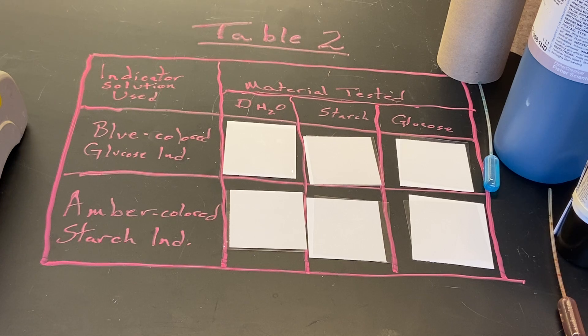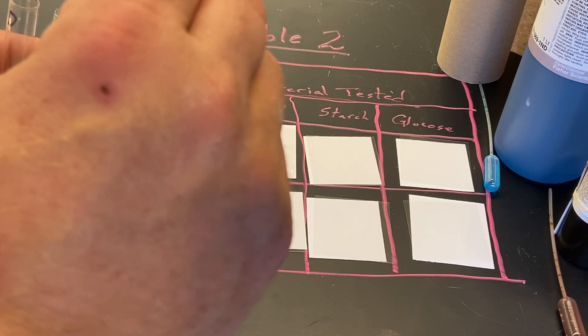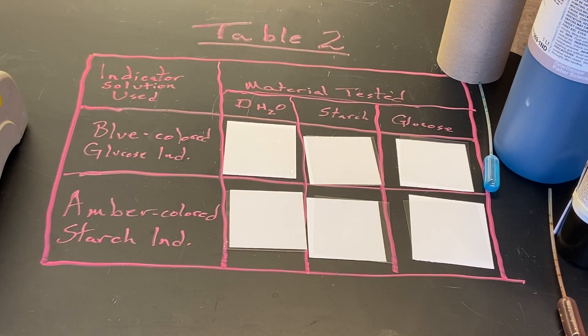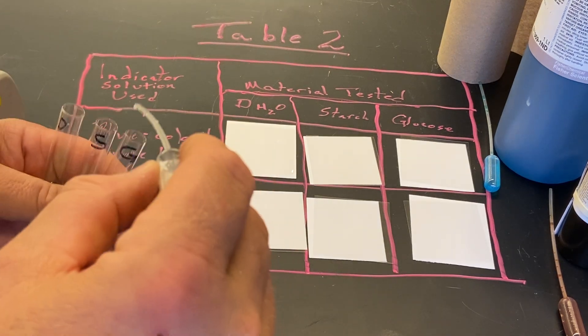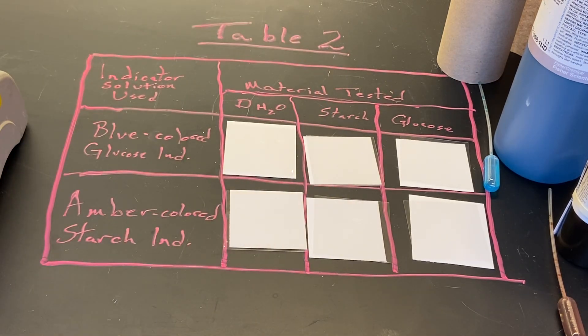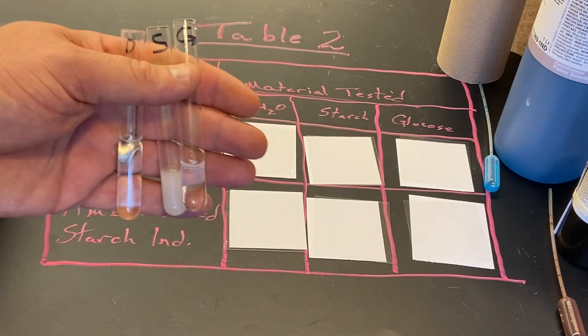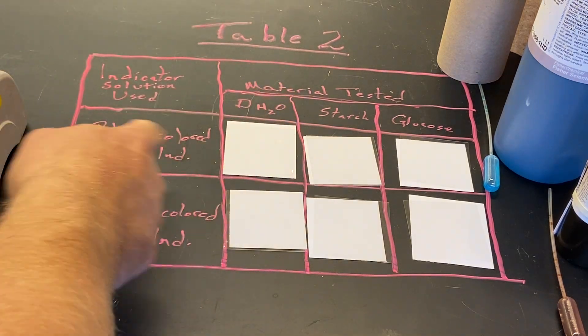Then some glucose in the G tube. I have pretty much comparable amounts. To test with the blue colored glucose indicating solution, you have to heat it, so we're going to put about 10 drops of that solution in each tube.